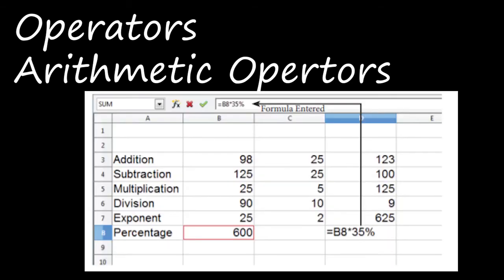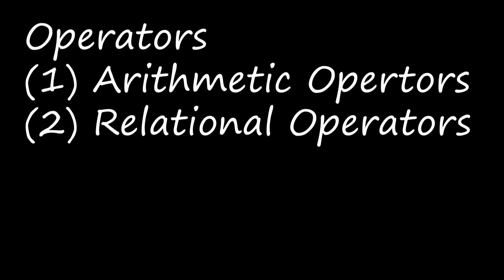The next one is relational operators. Relational operators are symbols used for comparing two values - like greater than, less than, less than or equal to, greater than or equal to. These are also called comparative operators. These operators return a value that is either true or false, so the result will be either true or false.